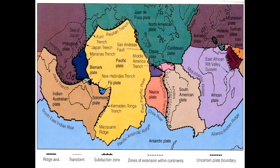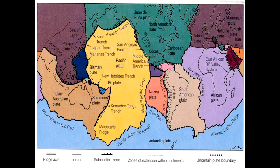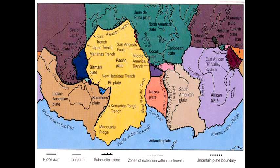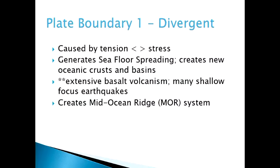Looking at this map, wherever you see two different colors meeting, that is where two plates are meeting — we call that a boundary. There are several different types of boundaries, defined by what the two plates are doing: are they moving towards each other, or going away from each other? We'll start with going away from each other.